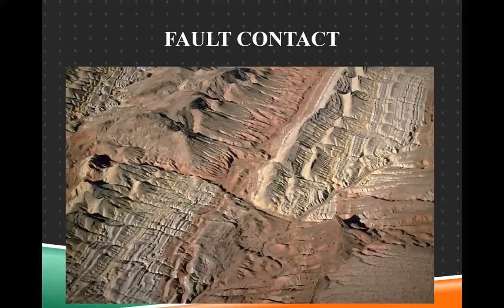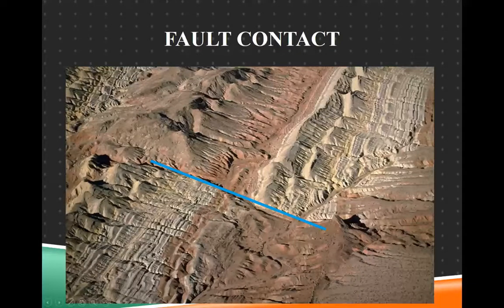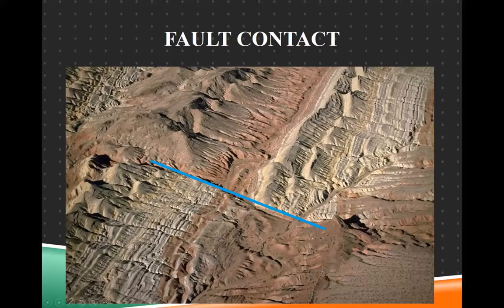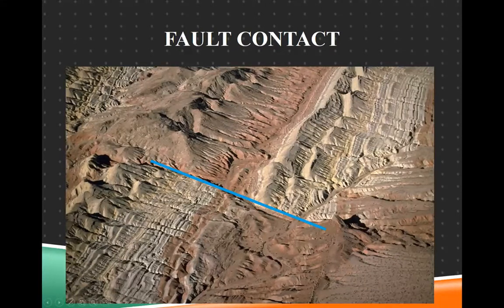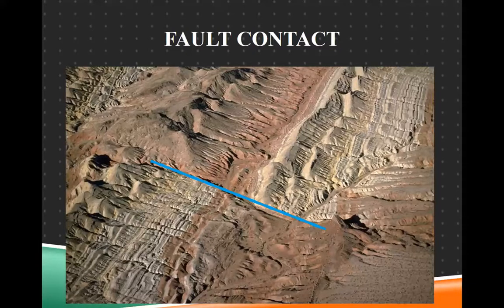Here we have a fault contact. The blue line indicates the fault, and this rock is contacting this rock — one is yellowish-white and the other is reddish-brown. This yellowish-white rock used to be right here; it was continuous, but the fault broke it and moved it, and now it's in contact with something else.